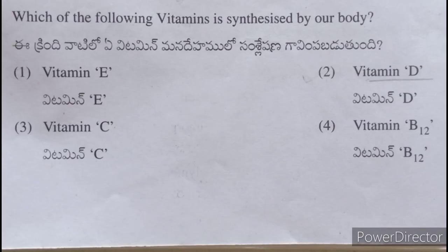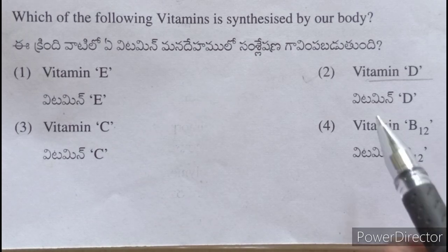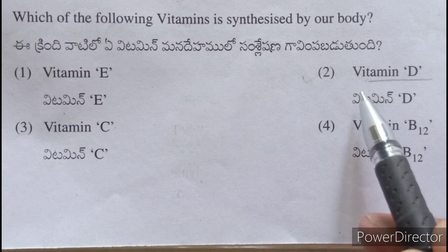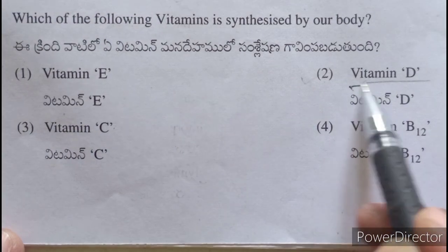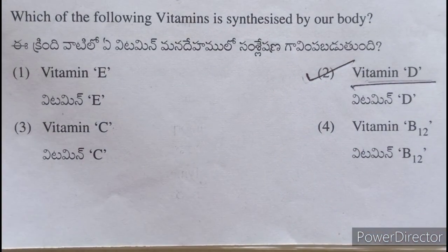Each of the following vitamins is synthesized in our body — vitamin mana dehumulo sumsiletion gaavipabadutundi — vitamin D is synthesized in our body.